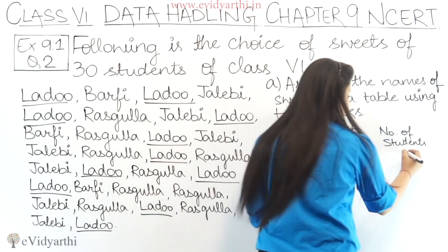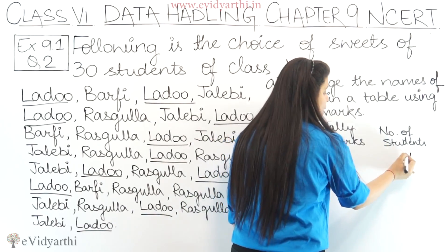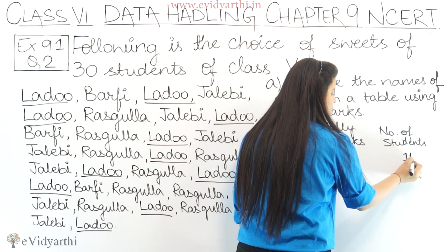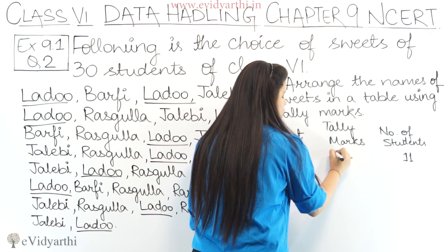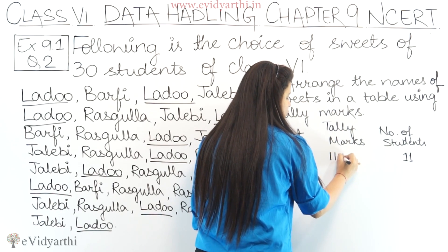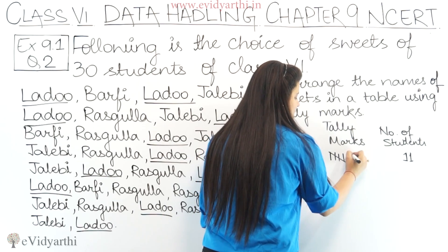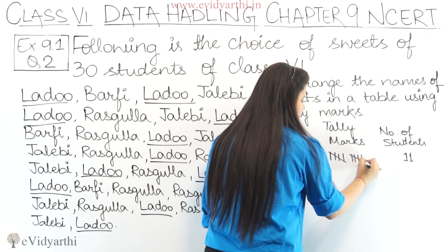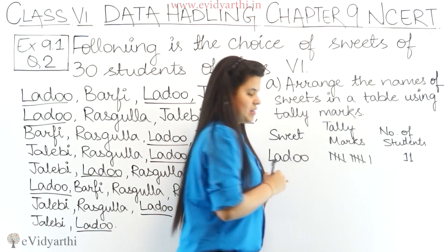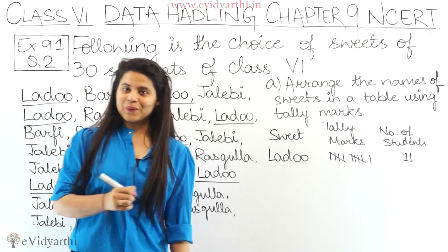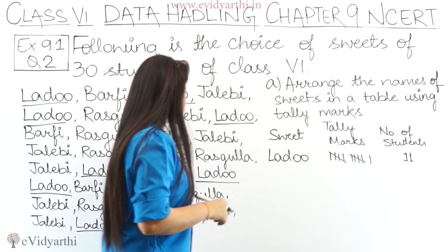So we will write 11 here. And in tally marks, how do we represent 11? We draw tally marks 1 through 11. Okay, so this is my first sweet entry done.